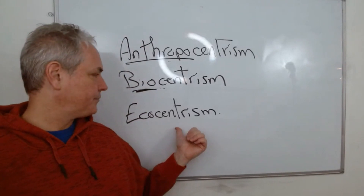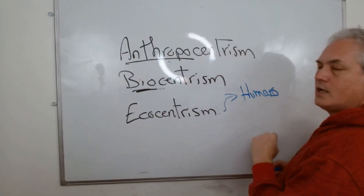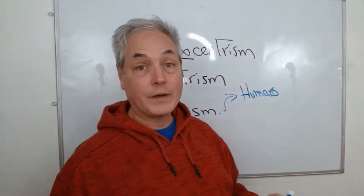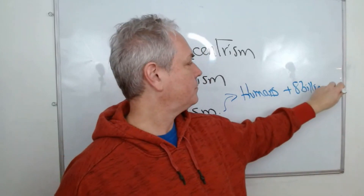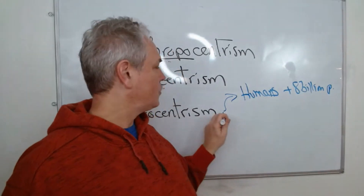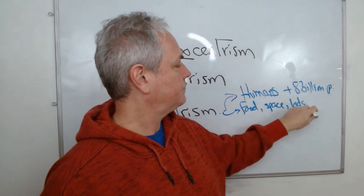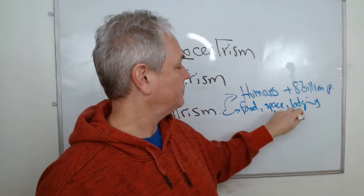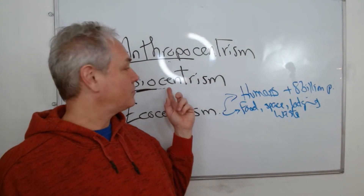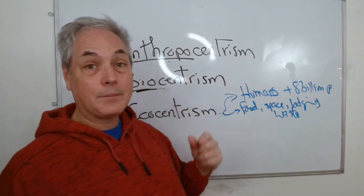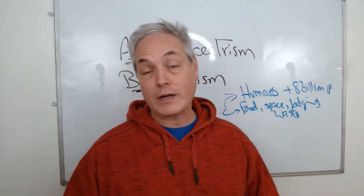The third word is ecocentrism. It's a bit tricky — we have humans, and humans on the planet are growing in population. We have more than 8 billion people on the planet. As humans, we need food, a place to stay, space, lodging, and we create waste. Some people say let's manage waste so that humans, animals, all kingdoms and plants work well. But if we only think about the biosphere — humans and living organisms — we're forgetting something very important: what is supporting all of that.